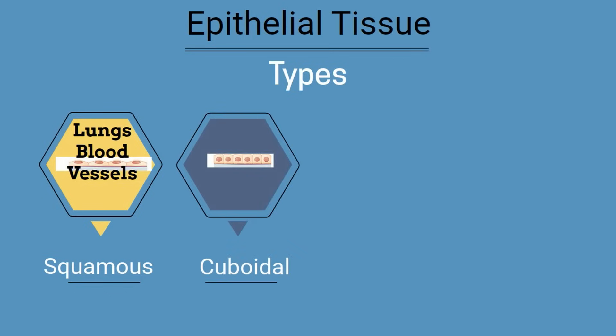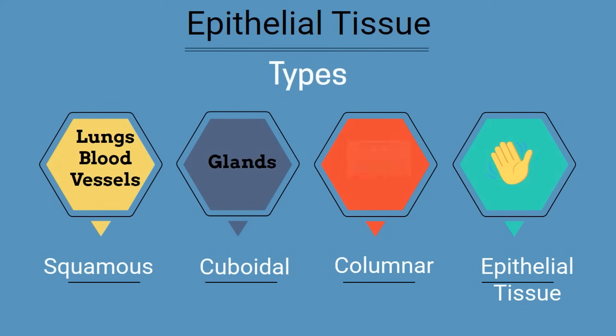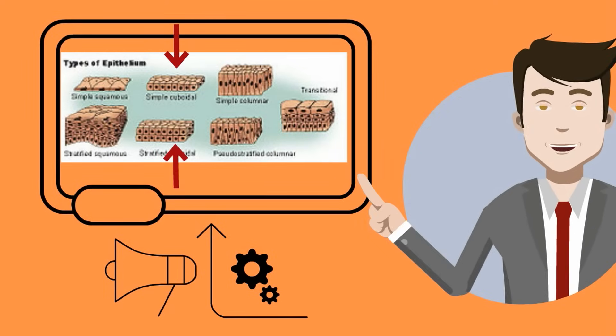Next up are cuboidal tissues, which have a width and height that are the same, like a cube. Many times you find these in important glands. Columnar tissues are just like a column — their height is greater than their width. You find these in the digestive tract and possibly the trachea. They are also divided into simple, which are one layer, and stratified, which are multilayered.